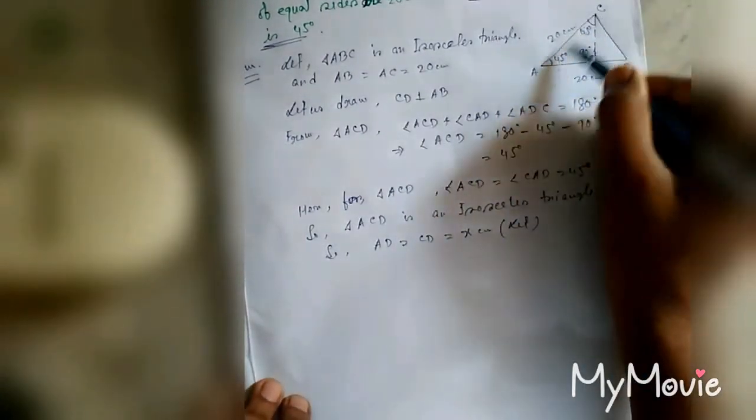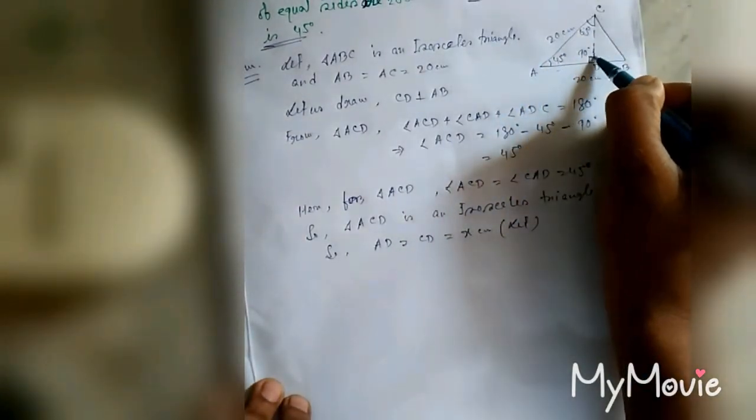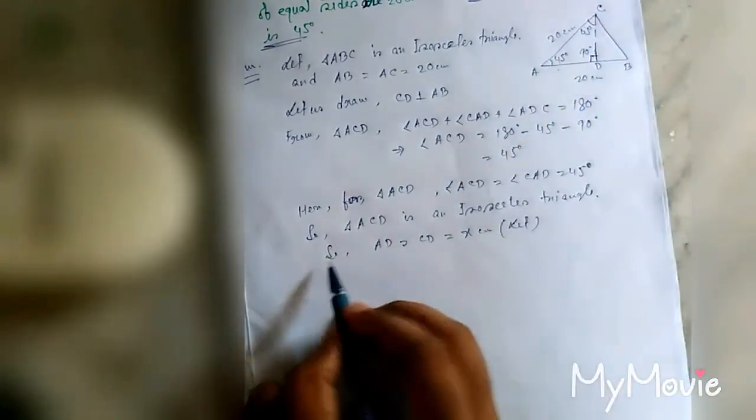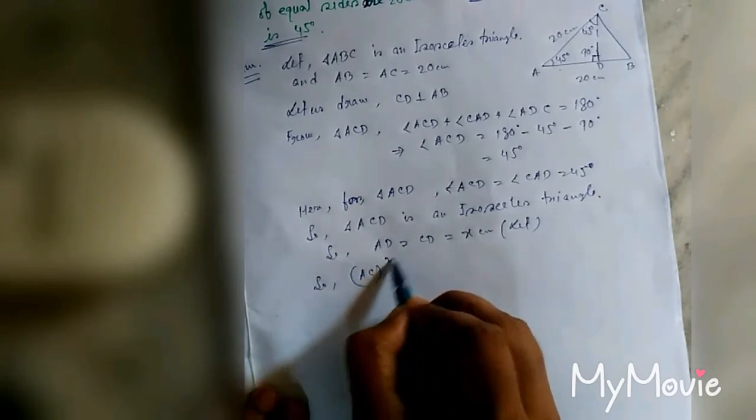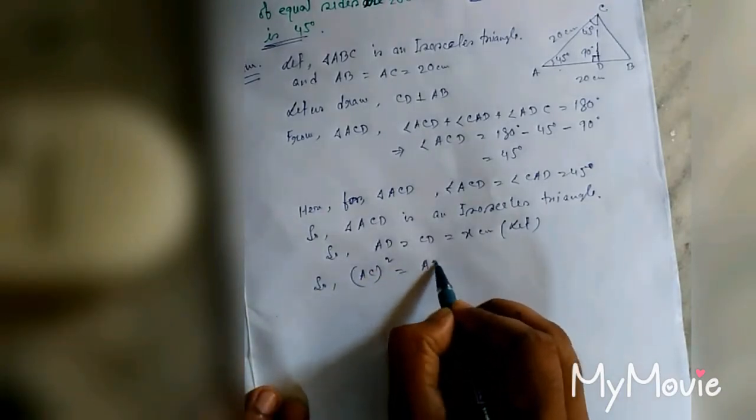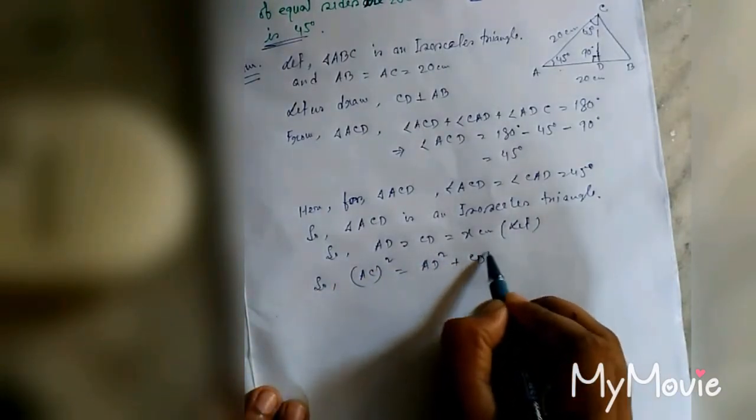Again, this triangle is also a right triangle isosceles triangle. So by Pythagorean theorem, AC square equal to AD square plus CD square.